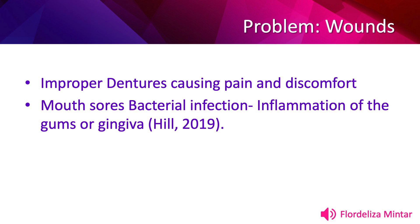I'm Flor Delisa Mintana and I will be discussing the third problem in this presentation: wounds. Dentures can cause wounds or ulceration in oral mucosa, causing pain and inability to eat, therefore being a factor of malnutrition. Improper dentures cause pain and discomfort. Elderly gums change over time, causing dentures to not fit properly. Improper use of dentures causes irritation of the soft tissue, causing cuts and sores. Bacterial infection and inflammation of the gums or gingiva can result from improper use of dentures causing gum infection. These conditions are favorable in developing oral ulcers, decreasing food and fluid intakes, which leads to malnutrition.